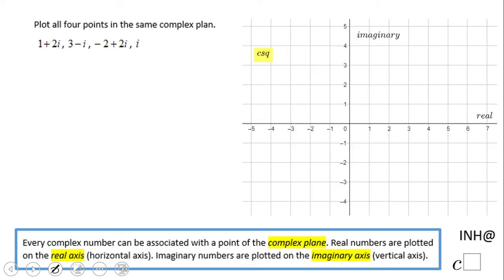Let's take the first point, 1 plus 2i. If you notice, the real part is 1, the imaginary part is 2. So that means from 0 and 0, we're going to go 1 right and 2 up, and we have the complex number 1 plus 2i.